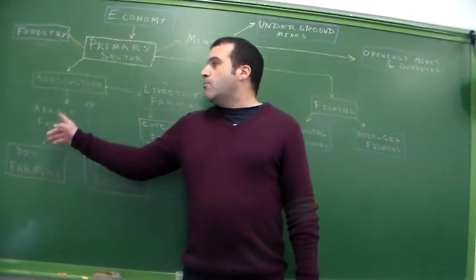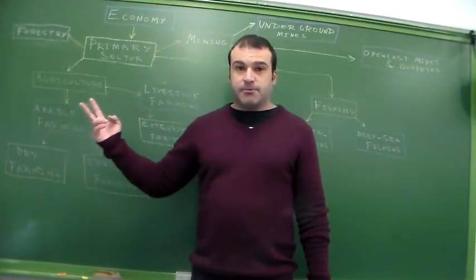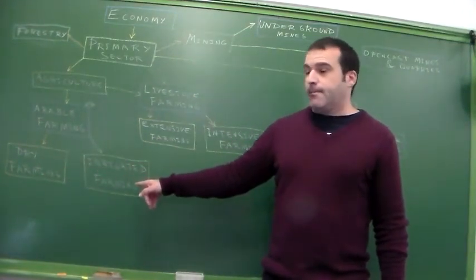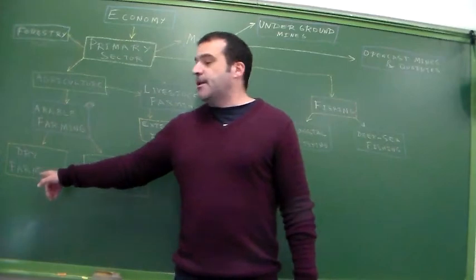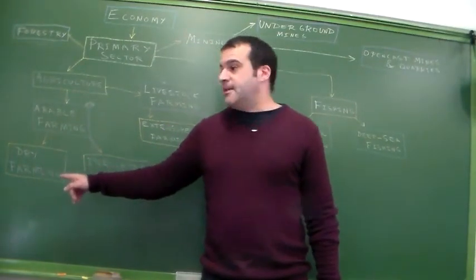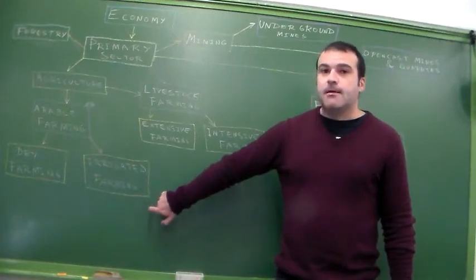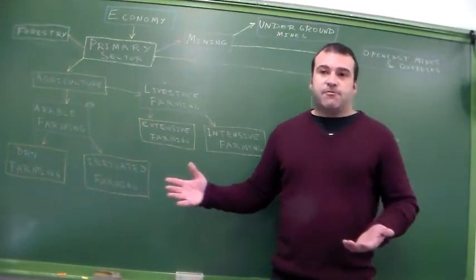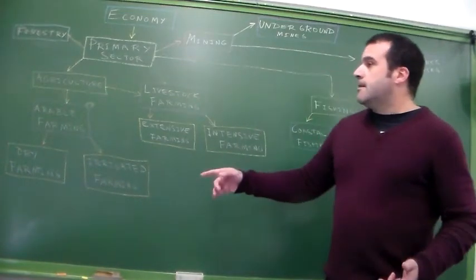And so, within arable farming, there's two types of farming. Dry farming and irrigated farming. Dry farming is the one that depends actually on the rain in order to get irrigated. And this one over here uses irrigated farming, uses artificial irrigation systems.